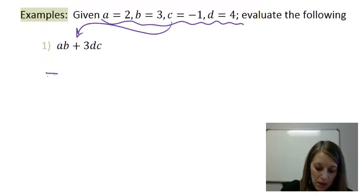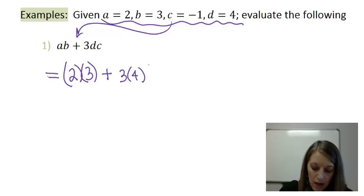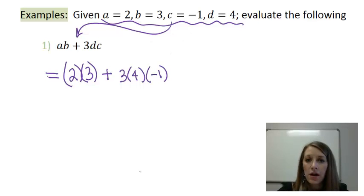A times B, where my A value is 2 and my B value is 3, I'm going to use 2 times 3, plus 3 times my D value, which is 4, times my C value, which is negative 1. So notice almost every number I have inserted in with parentheses.